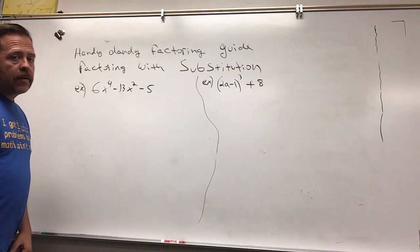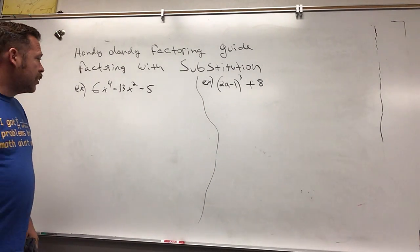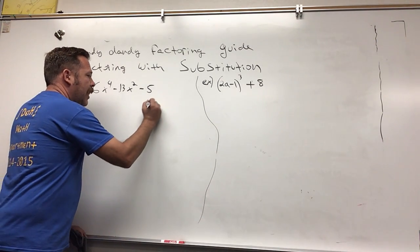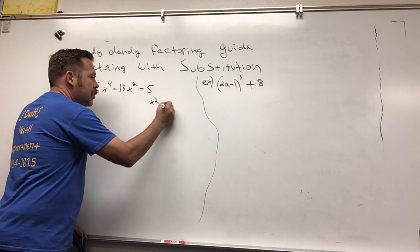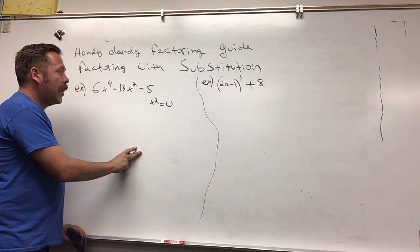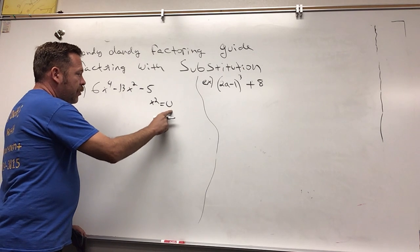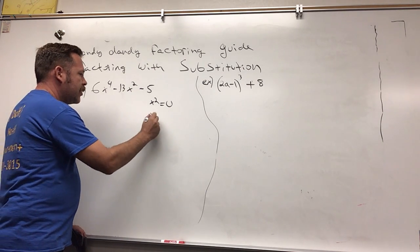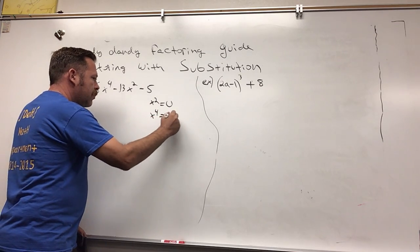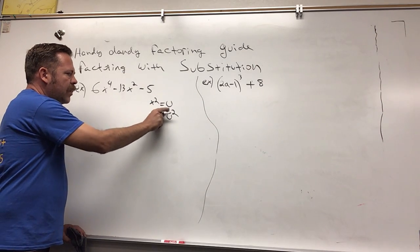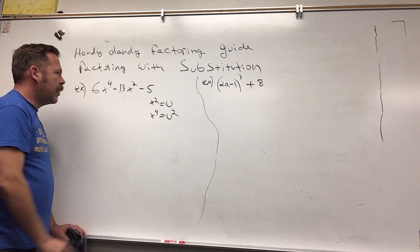But we got a little trick around it if we use substitution. What we're going to do is say that x squared equals u. And then if we do that, I could say x to the fourth equals u squared. Doesn't that make sense? So we're temporarily going to substitute x squared with u and x to the fourth with u squared.